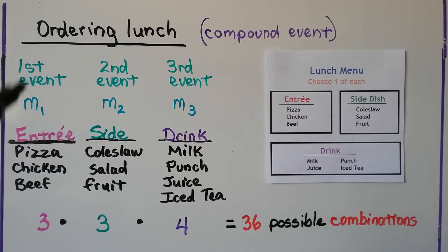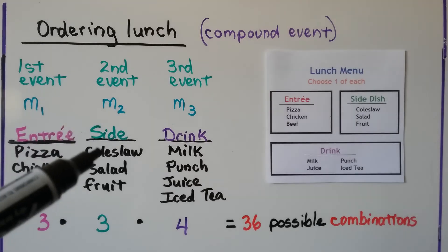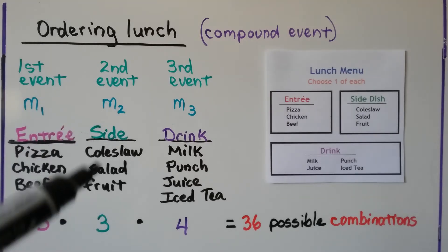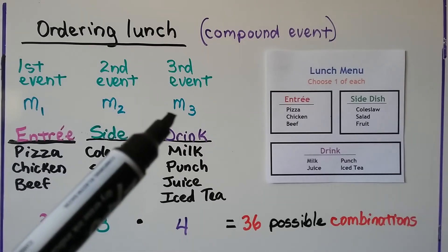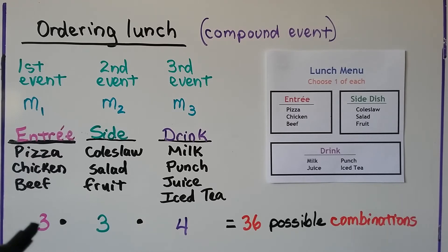The first event would be the entree. That would be our m sub 1. There's three of those. Our second event would be our m sub 2, the side dish. There's coleslaw, salad, fruit. That's three. And our third event would be the m sub 3, the drinks. There's four of those. We would do 3 times 3 times 4 to find that there's 36 possible combinations for ordering lunch. And that's a compound event. We'll talk about that more in the chapter later on.